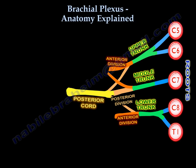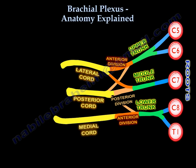The posterior cord is the cornerstone of the brachial plexus. The upper two anterior divisions unite to form the lateral cord. The lower anterior division forms the medial cord on its own — it also learned from the middle child theory and wants to be independent.